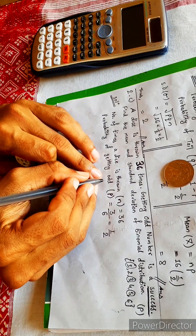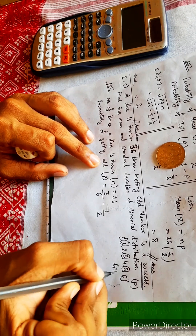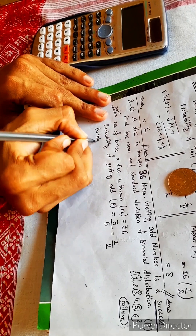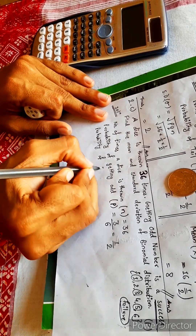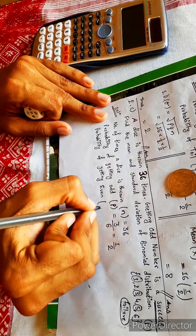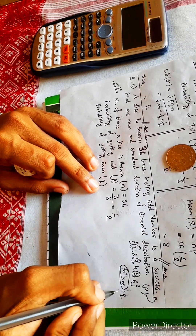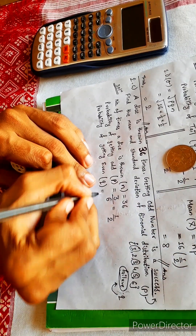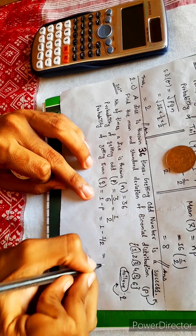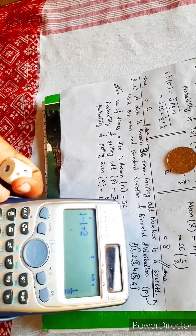So probability of getting odd is success. The opposite of success is failure. So what is this failure? Failure is probability of getting even. This we represent as Q. Q is our failure. P is our success. Q is 1 minus P. 1 minus P is 1 minus 1 by 2. This is also 1 by 2.